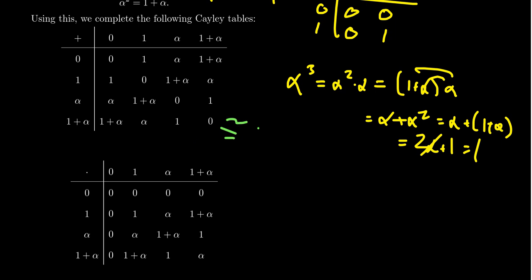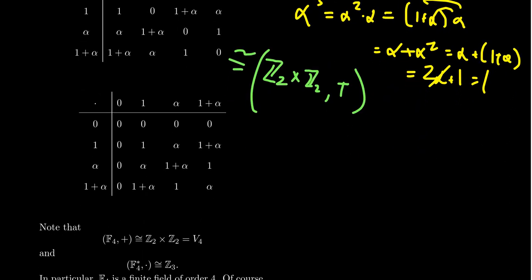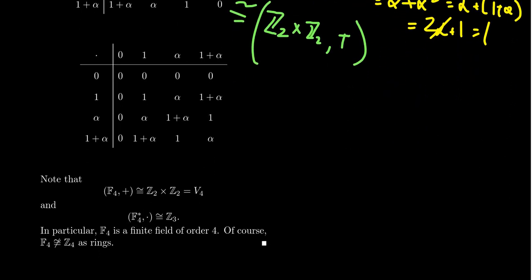Notice that the additive structure — if you look carefully — is just the Klein four-group, Z2×Z2, with the usual addition. This will always happen with these finite fields: the additive structure gives you an elementary abelian group.